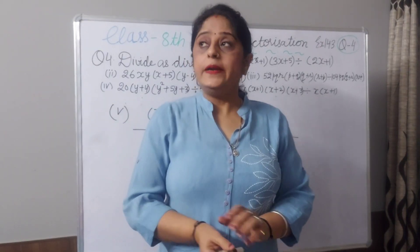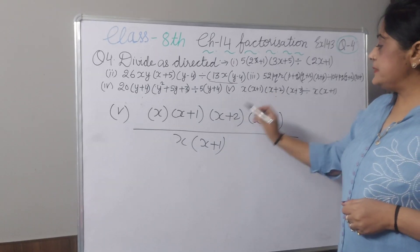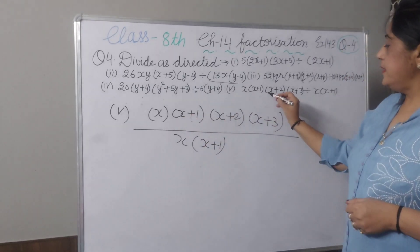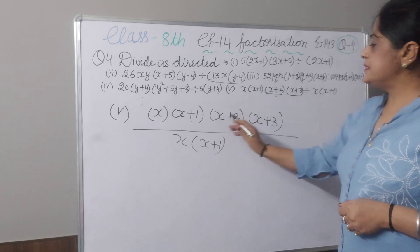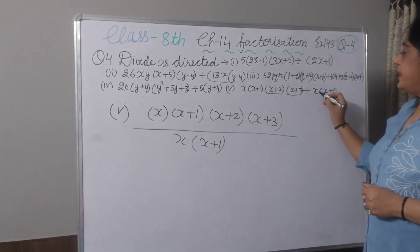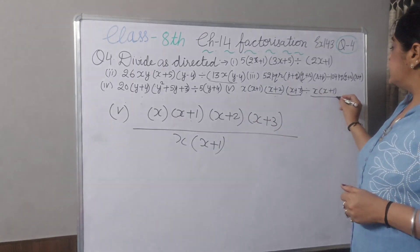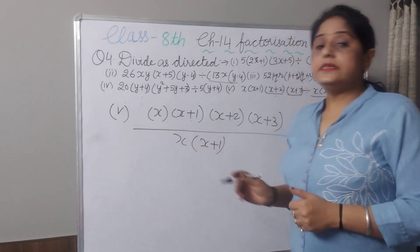Now, fifth part. See the statement. x into x plus 1, x into x plus 1, x plus 2 into x plus 3, I have written as a numerator. And you have to divide by x into x plus 1. So I write x into x plus 1 as a denominator.